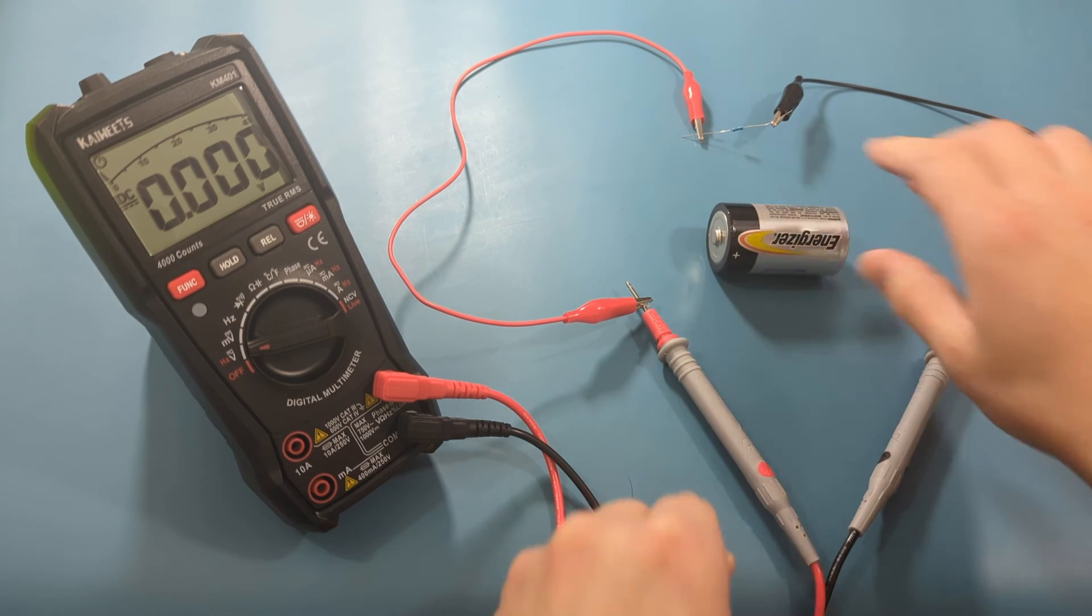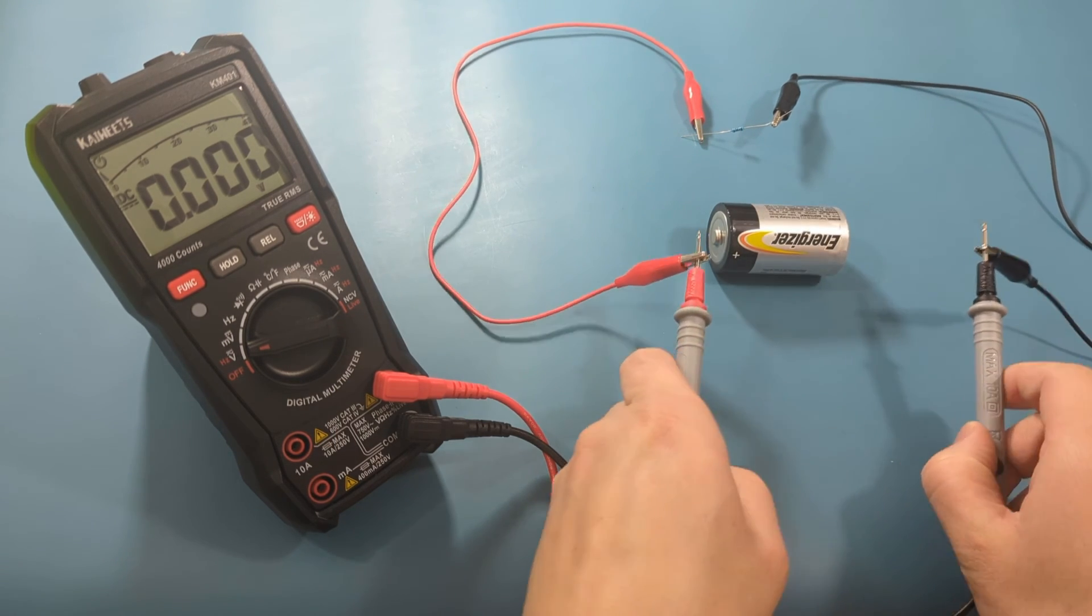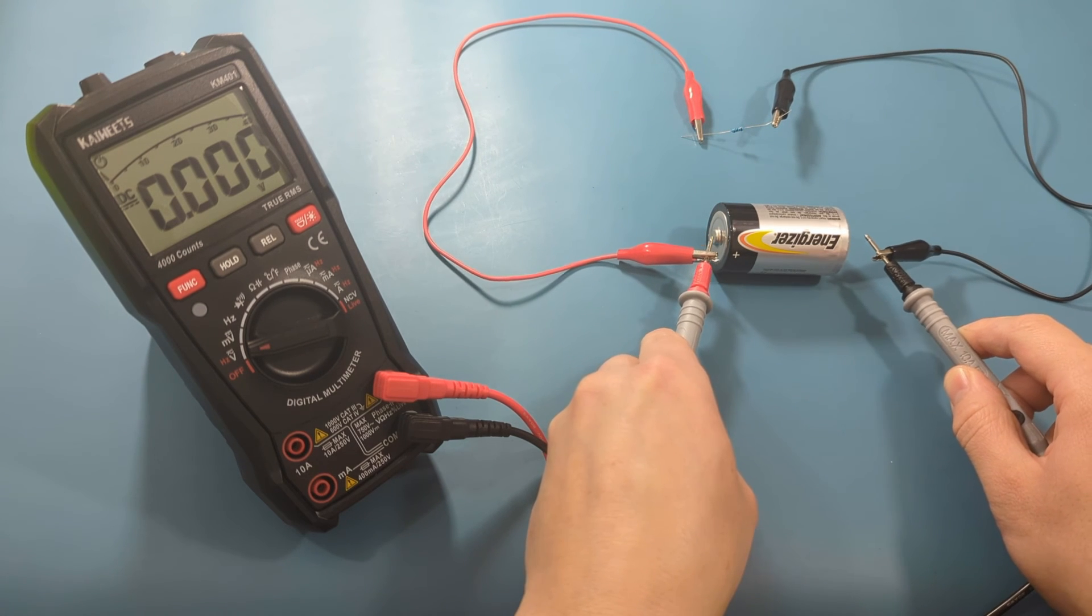Attach the red probe lead to the positive end of the battery, and the black probe lead to the negative end of the battery.